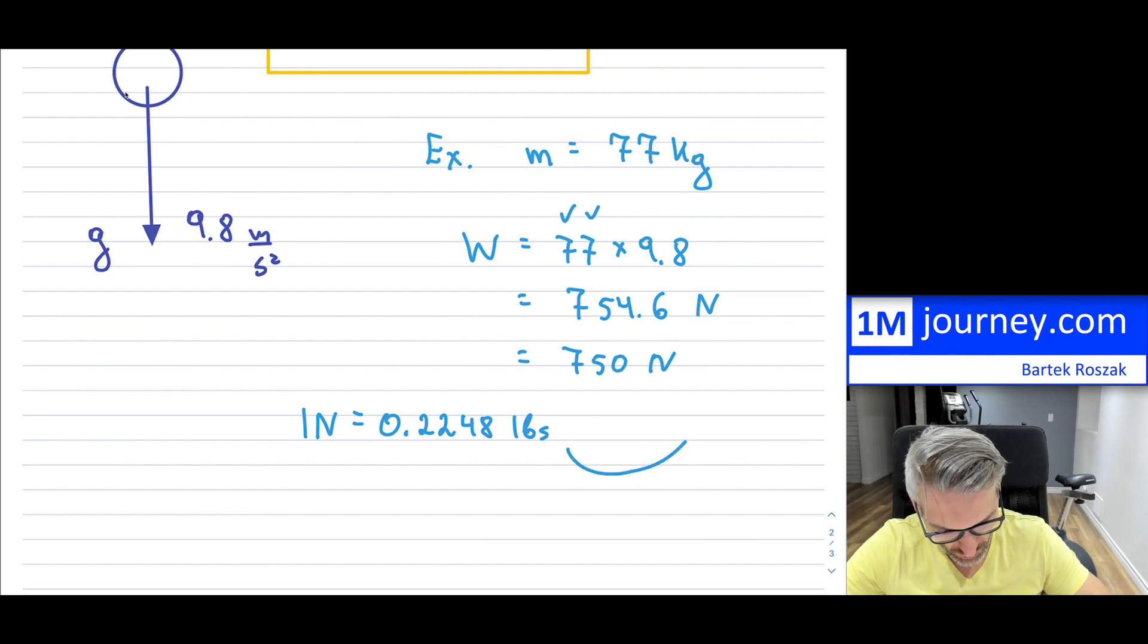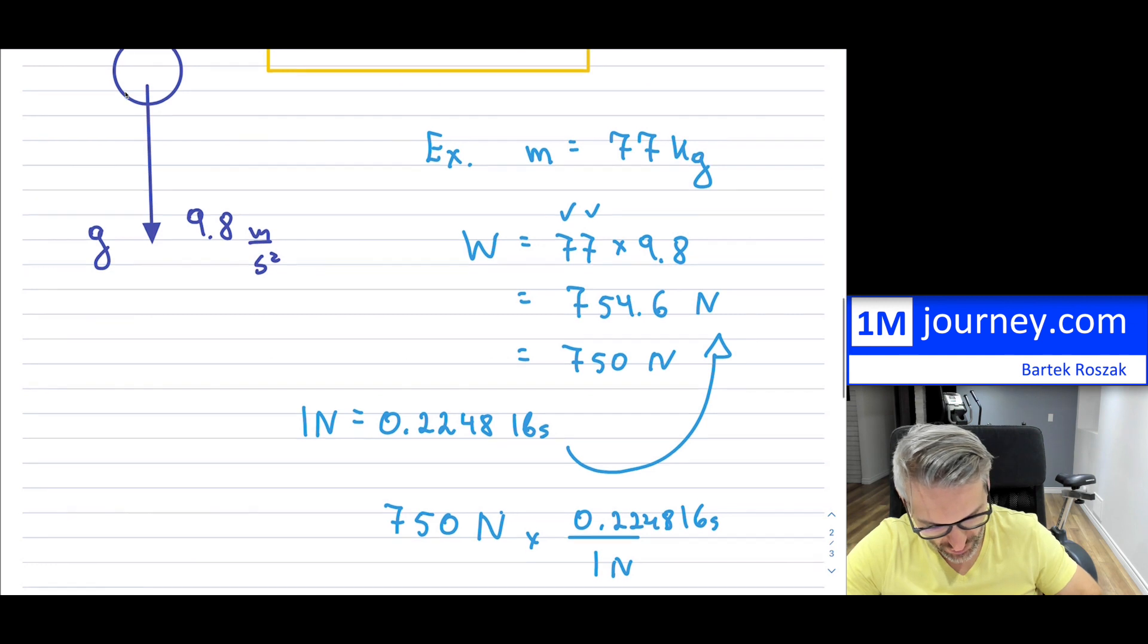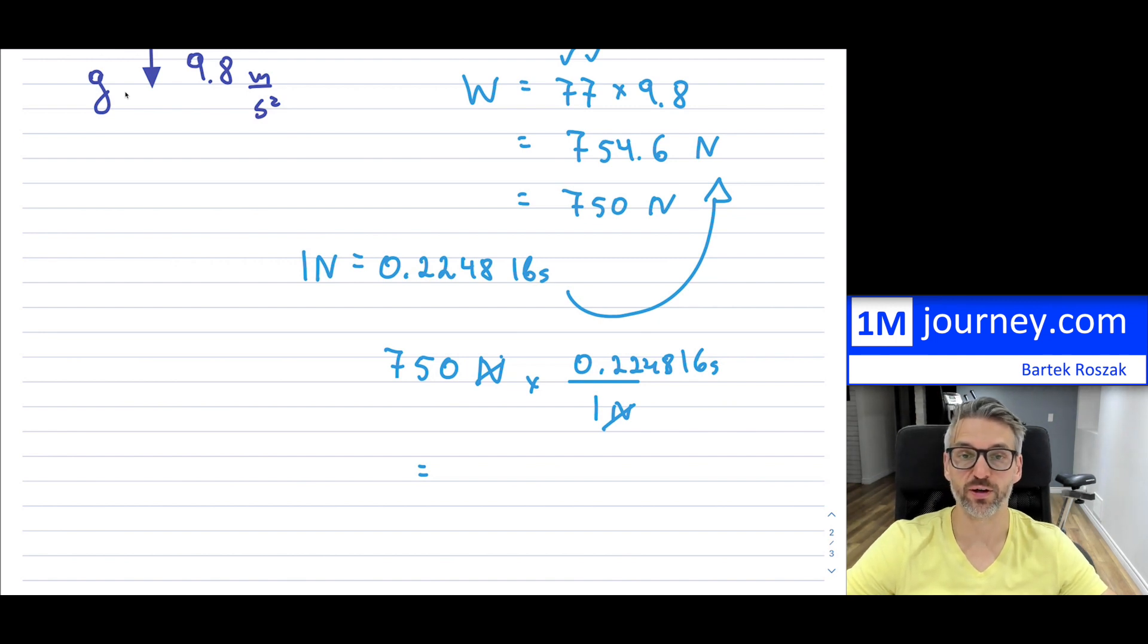And convert this back into your pounds. And that would have been, if I put 750, and then this would have been, the conversion is rather simple for us to be able to do, especially if we know what that conversion ratio is. So this is what you would have in here. The newtons would cancel off, and then you would get your approximate answer for pounds and you can round accordingly.